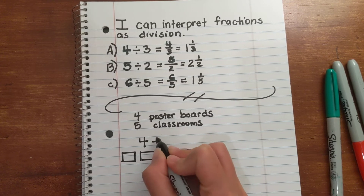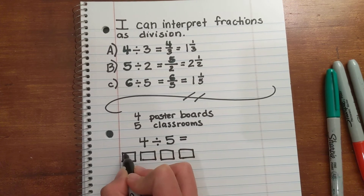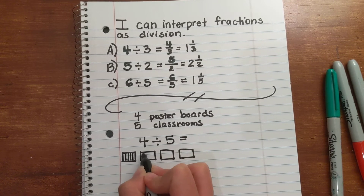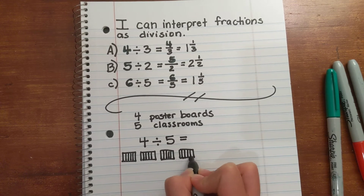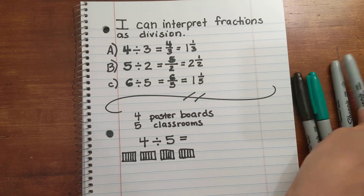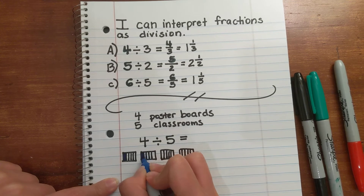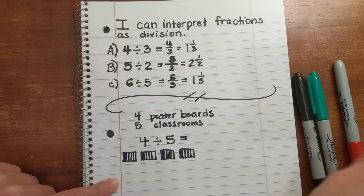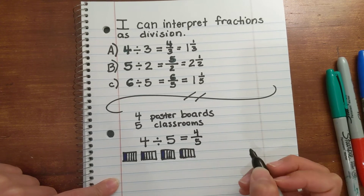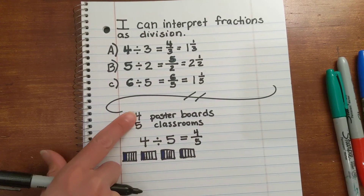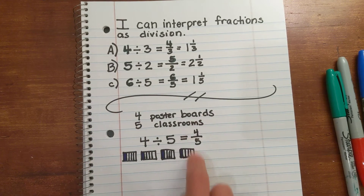I'm dividing the four poster boards between the five classrooms, so I'm dividing by five. Each classroom gets one-fifth, two-fifths, three-fifths, four-fifths. Each classroom gets four-fifths of a poster board because you have a number that's less than the divisor, so the quotient is going to be less than a whole.